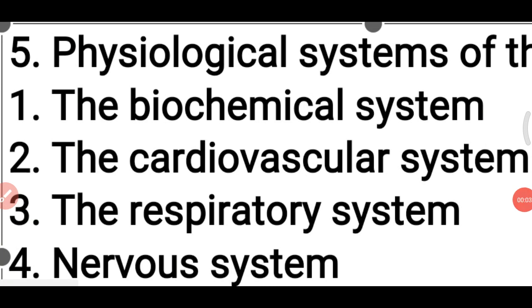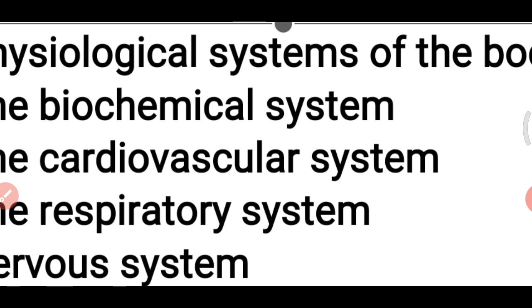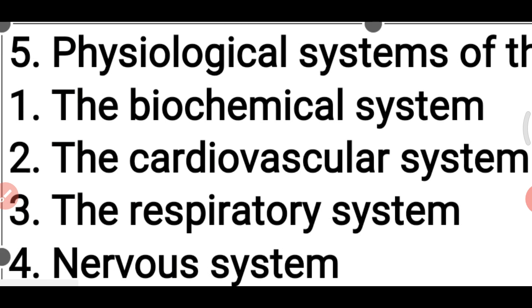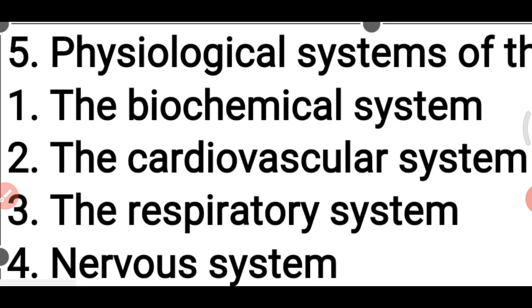Today the fifth topic of biomedical engineering is the physiological system of the body — specifically the major types of physiological systems. The first is the biochemical system. The human body has a biochemical system which produces energy, messenger agents for communication, and materials for growth, all from a single point of intake: food, water, and air.